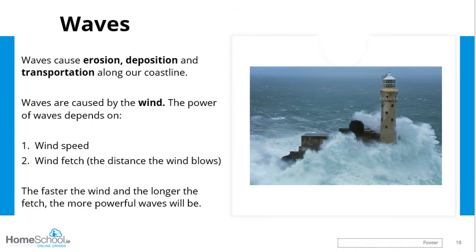Waves are caused by the wind. When you're on the coast and it's very windy, there will probably be strong or decent-sized waves as well. Waves can be powerful or light — you've probably been in the sea and felt waves coming in around your ankles, which are light waves, or more powerful violent waves that could actually hurt you. The power of waves depends on two things: first, the wind speed. A 10 km/h wind results in very light waves, while a 60 km/h wind results in quite big waves.